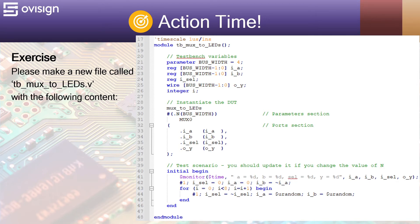After this we use a for loop to repeat the same scenario. After 1 microsecond we toggle the value of sel and a and b get some random values. We will see how it behaves on the waveform.